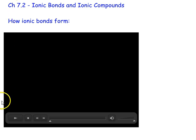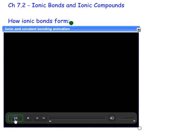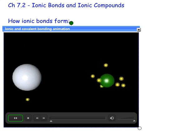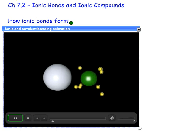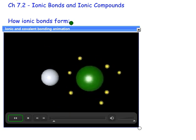I'm going to start by showing you an animation which shows a schematic idea on the molecular level, on the atomic level, of what's happening when an ionic bond forms between a metal atom and a non-metal atom.